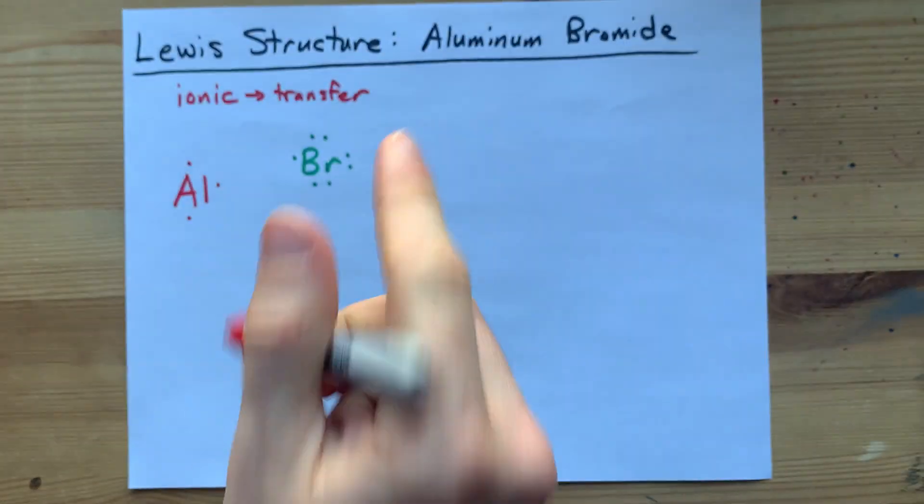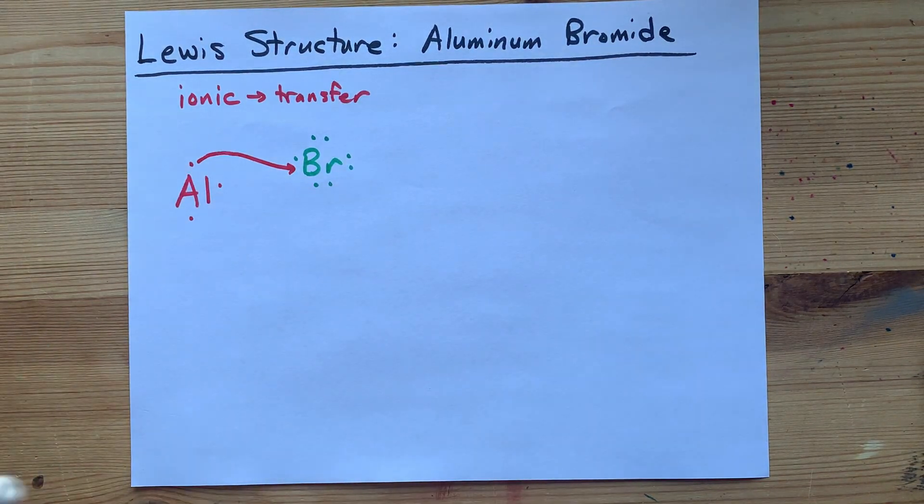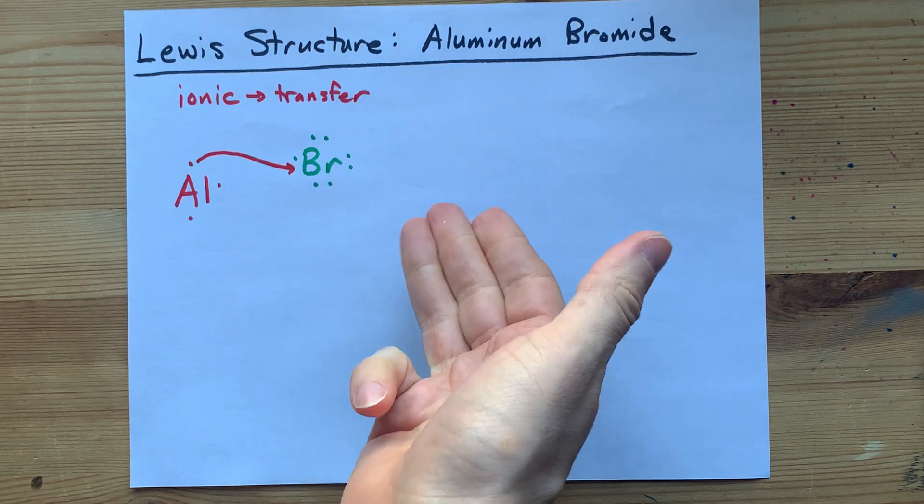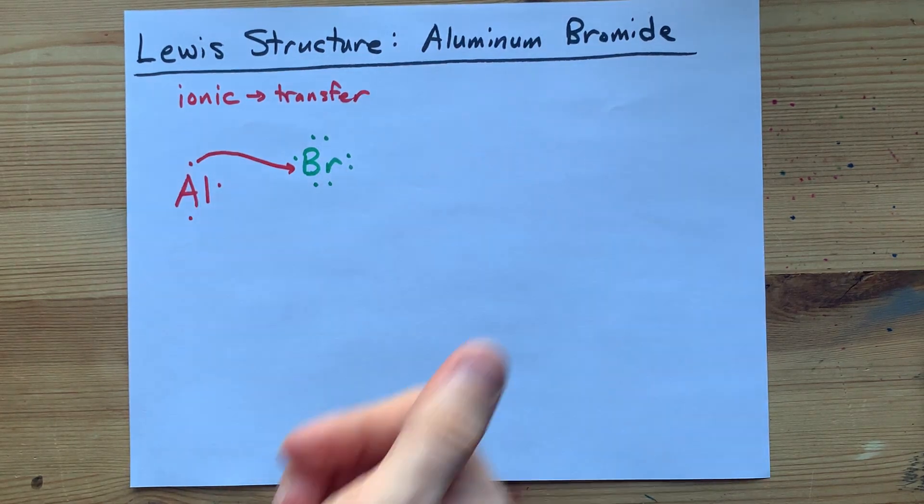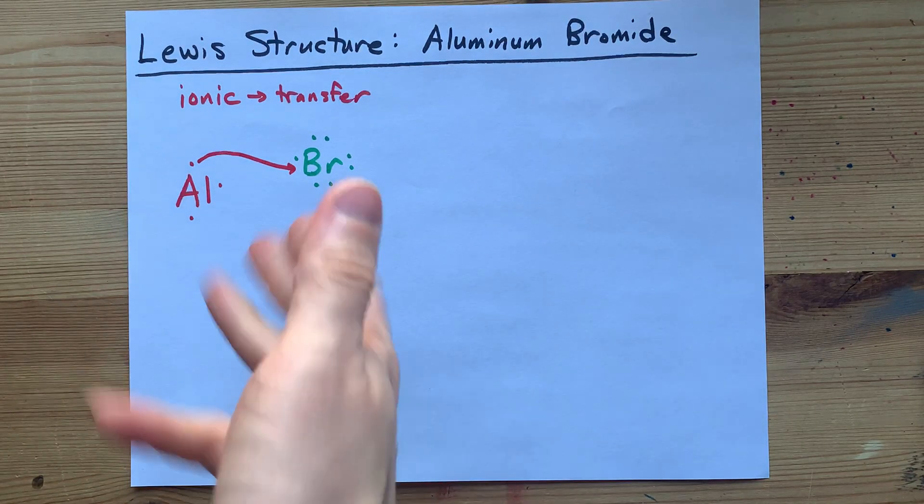Aluminum, a metal, does not mind giving up its electrons. So it does. And that's great. This bromine is now stable because it has a full octet, or 8 electrons, but aluminum still has an extra 2. Where are they going to go?